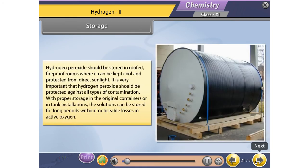Storage: Hydrogen peroxide should be stored in roofed, fire-proof rooms where it can be kept cool and protected from direct sunlight. It is very important that hydrogen peroxide should be protected against all types of contamination. With proper storage in the original containers or in tank installations, the solutions can be stored for long periods without noticeable losses in active oxygen.